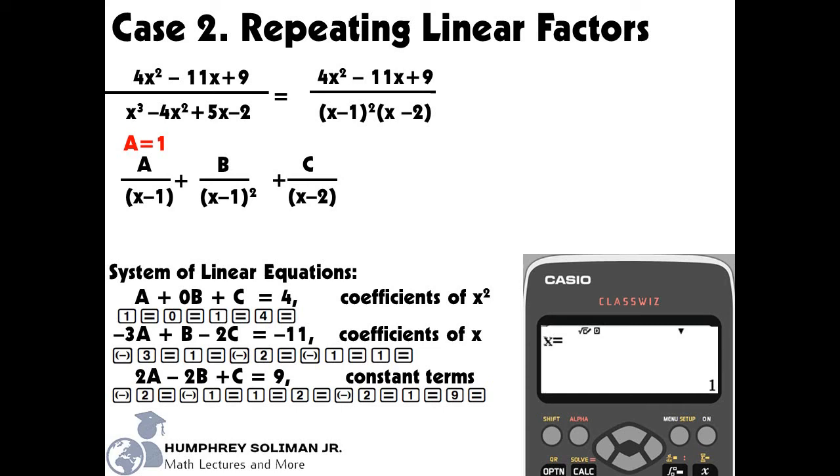And if we press the equals key again, we will get our value of y: y equals negative 2. This value of y corresponds to our value of B. Finally, if we press the equals key one more time, we will get our value of z: z equals 3. This value of z corresponds to our value of C.